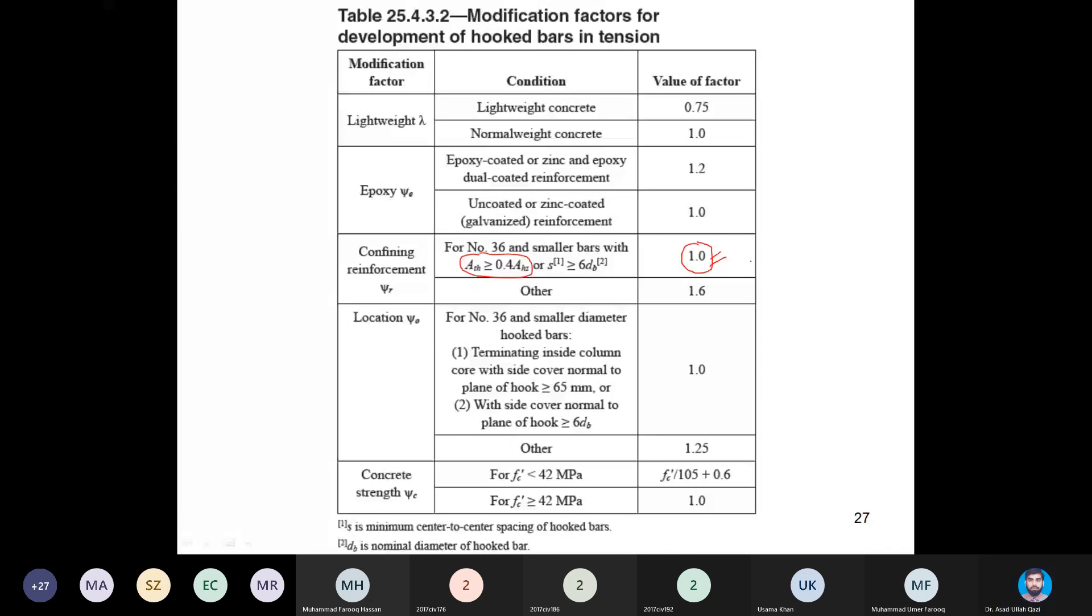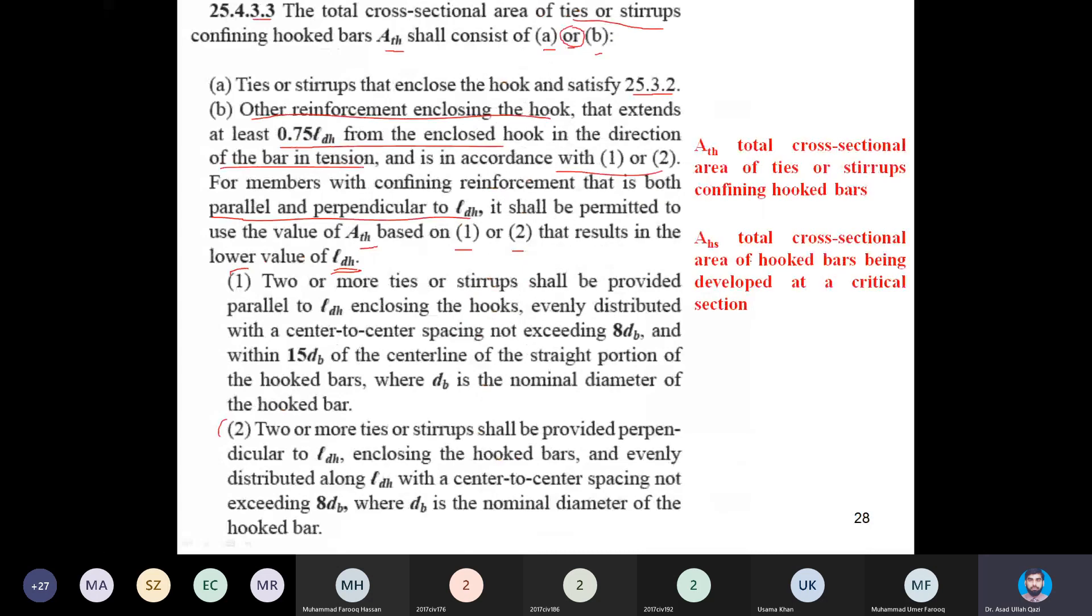What is first? It is stated two or more ties or stirrups shall be provided parallel to the LDH, enclosing the hook evenly spaced with center to center spacing not exceeding 8dB and within 15 dB of the center line of the straight portion of the hooked bars, where dB is the nominal diameter of the hooked bars. All this paragraph is described through this picture.